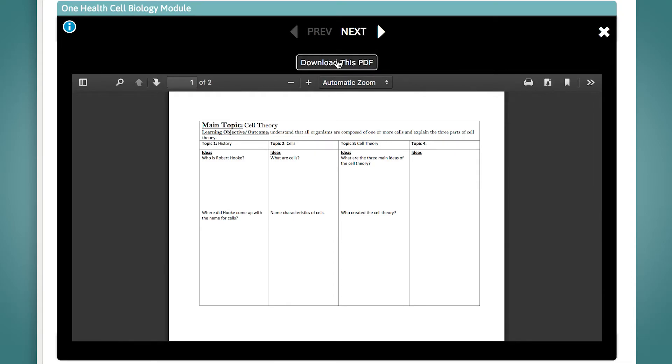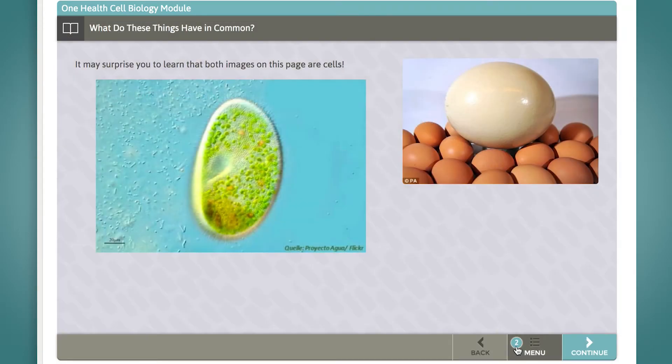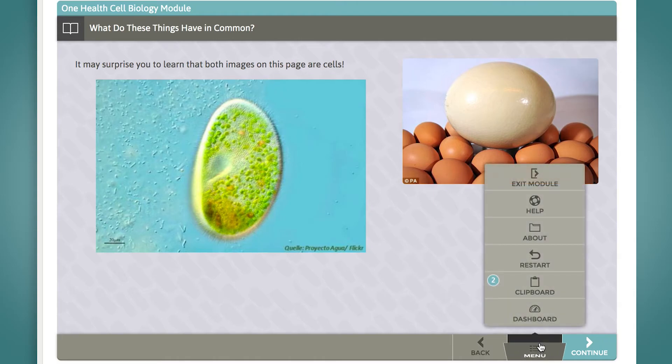You will know if documents are available on the clipboard by the presence of a number located on the menu icon. Anytime a number is present with a circle around it, it's an indication that you have documents available on the clipboard for your use.